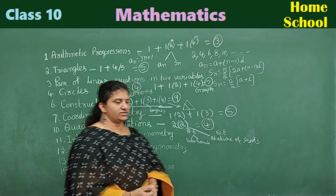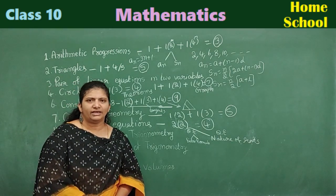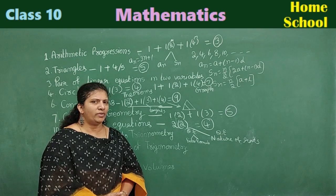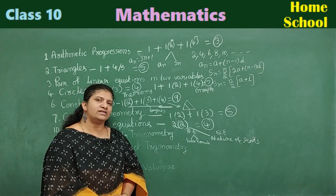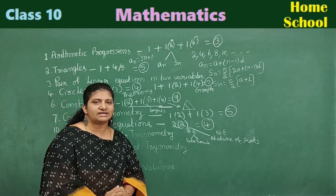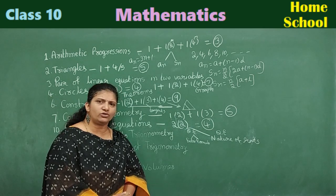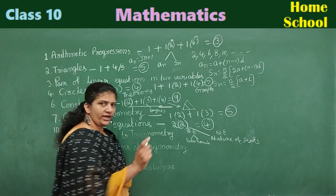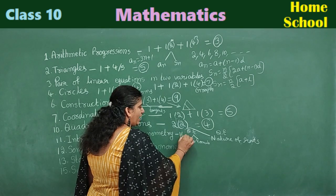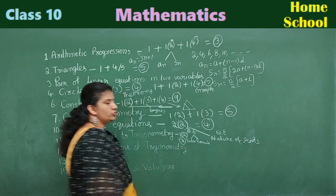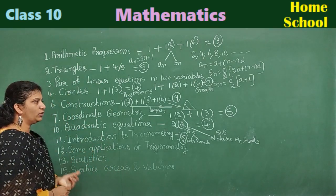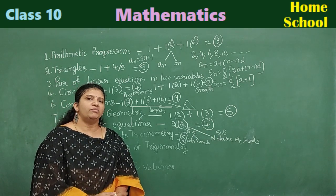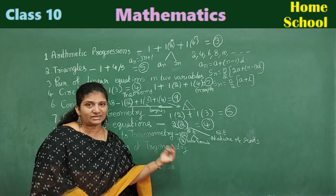Introduction to Trigonometry is a little difficult to guess. If you know the full ratio table, you may expect one two-marks question. The last exercise of this chapter has 10 questions — all are very important and you can expect one question from there. For Some Applications of Trigonometry, one word problem will be given for three or four marks, but since we cannot guess the specific problem, that chapter is being skipped in this guessing guide.